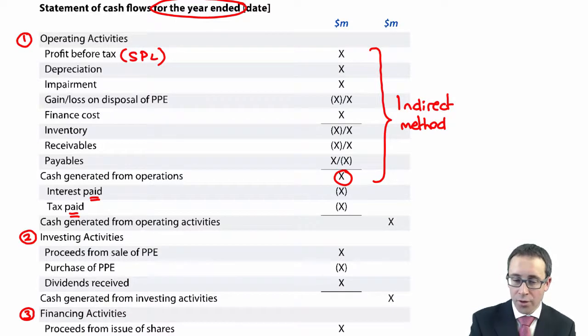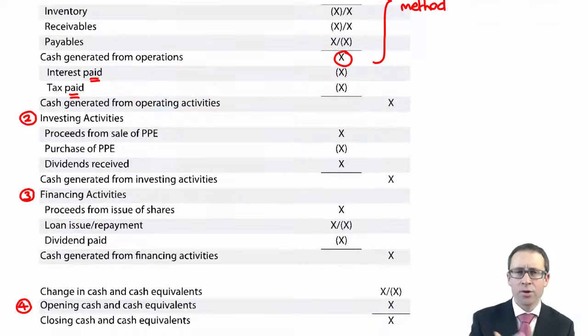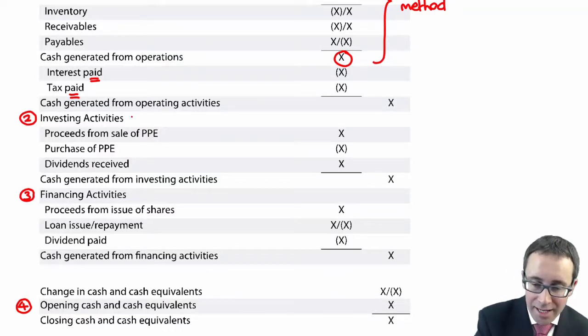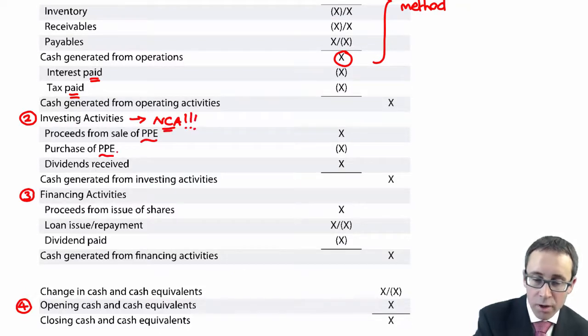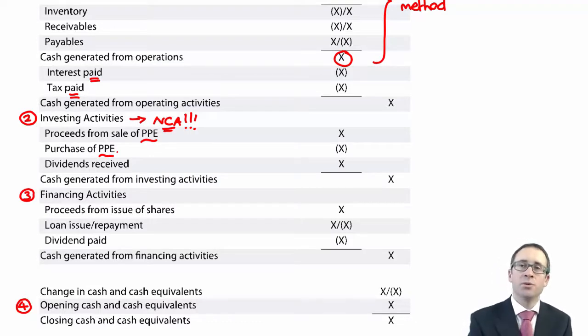You then move on to your investing activities. So, make sure you know what goes in your investing activities. It's anything to do with the buying and selling of non-current assets. So, here we primarily refer to property, plant, and equipment, but it could be intangibles, investment property, you name it. Financial instruments, so investments that you have made in shares. But what you've got there, the proceeds from the sale is an inflow. The purchase is an outflow. And then you may have invested in shares, you may have invested in debt, so therefore, you get some interest or dividends. So, there, I'll just put in dividends received. You could also have interest received as well.